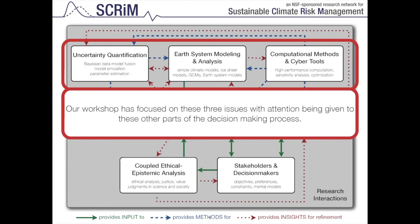Within SCRIM we've identified a large number of activities. Across the top we have the uncertainty quantification group, primarily led by Murli Haran, a statistician at Penn State. We have a group working on earth system modeling and the analysis of earth system outputs. We have people working on computational methods like the optimization tools discussed yesterday by Chen Yun — tools for finding optimal solutions to specific problems fall inside the cyber tools and computational methods approach.